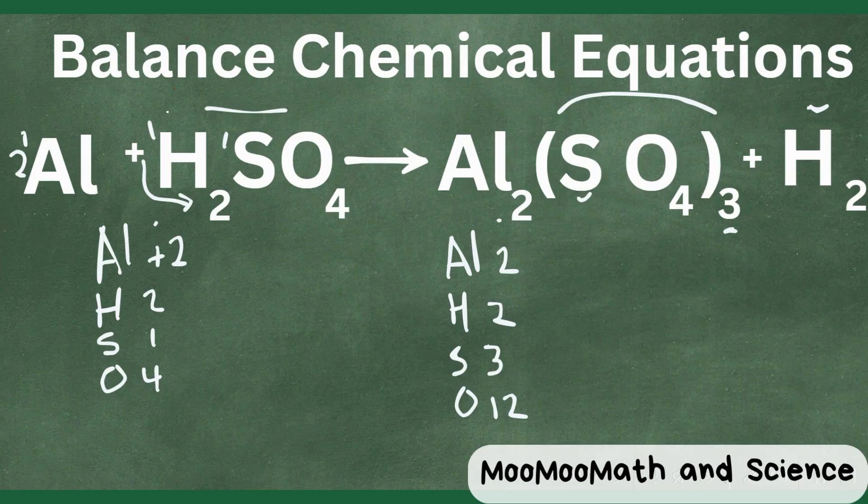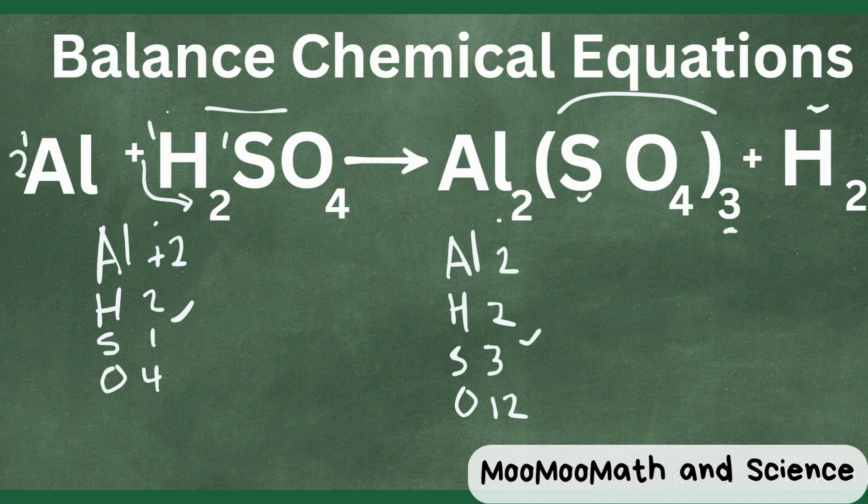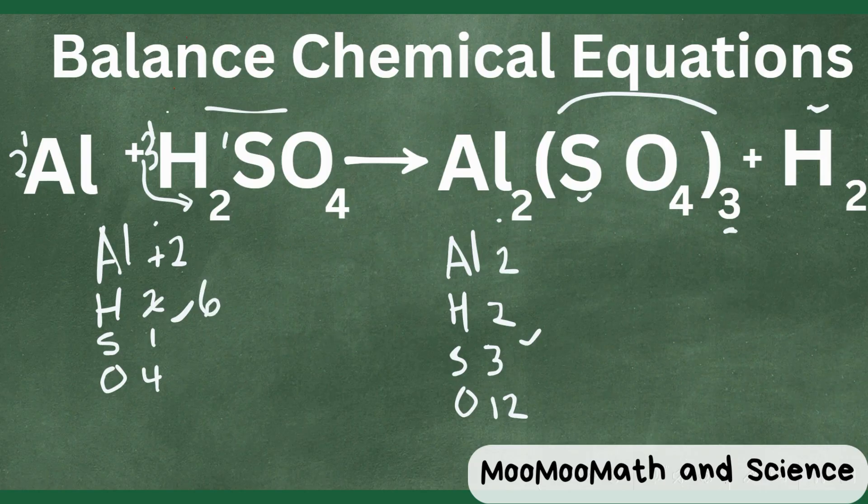We have one here, one on this side and then we have three on this side. So let's multiply this compound by three. Okay so now that means the hydrogen changes to six, the sulfur changes to three, and the oxygen changes to twelve.